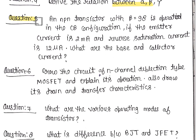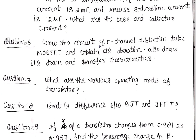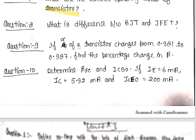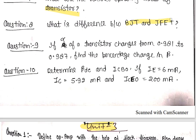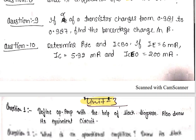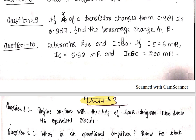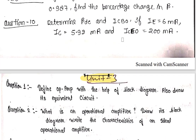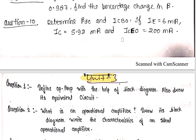Question number 5 is a numerical — study that. Question 6 covers MOSFET operation and depletion mode. Question number 7 is operation modes of transistor. Also see the difference between BJT and JFET once. Questions 9 and 10 are numericals — pause and study those. That's all for Unit number two.